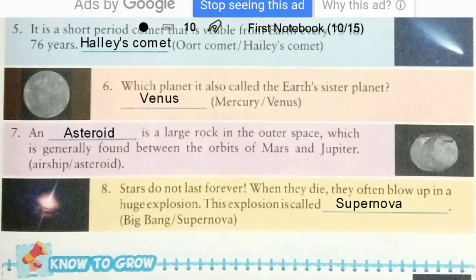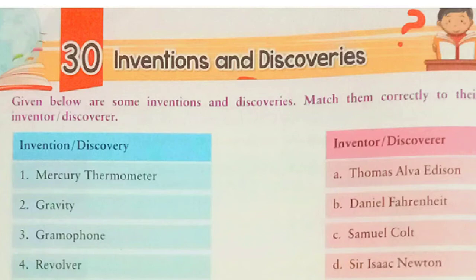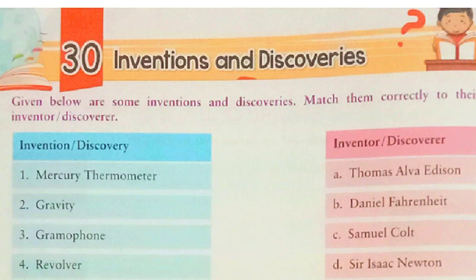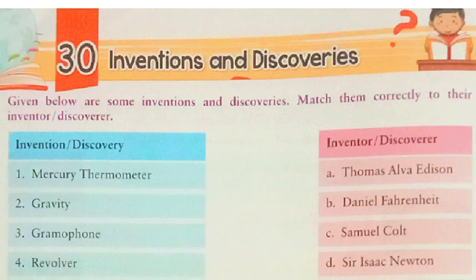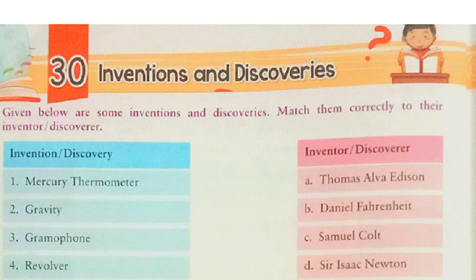Now we move to Exercise 30: Inventions and Discoveries. Given below are some inventions and discoveries — we have to match them correctly to their inventor or discoverer. Number 1: Mercury Thermometer — the inventor is Daniel Fahrenheit. His full name was Daniel Gabriel Fahrenheit.